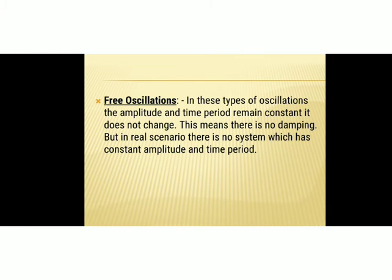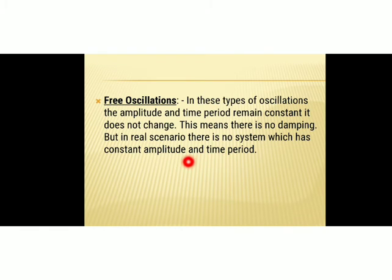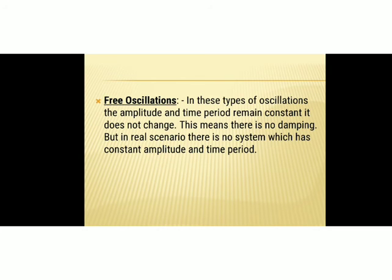Another type of oscillation is free oscillation. In free oscillation, the amplitude and time period remain constant — they do not change — which means there is no damping. When a body oscillates in the absence of any external forces or friction, the oscillations are said to be free oscillations. This is just a theoretical or ideal case; in reality we cannot find any free oscillation. If we perform a simple pendulum experiment in space, we might observe free oscillations, since in space there is nothing to provide friction.